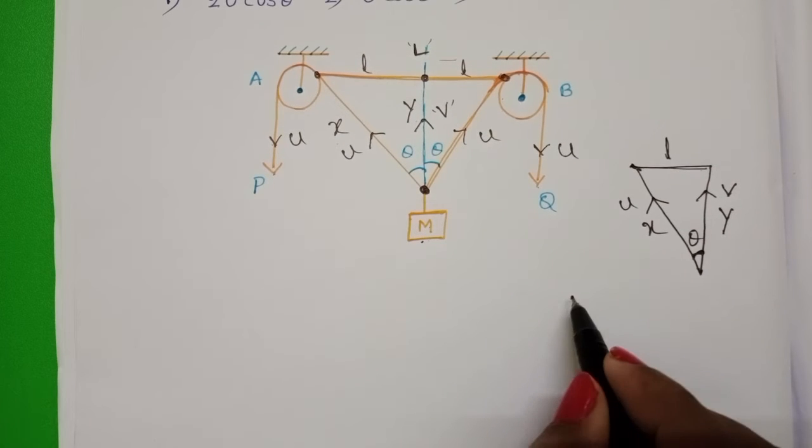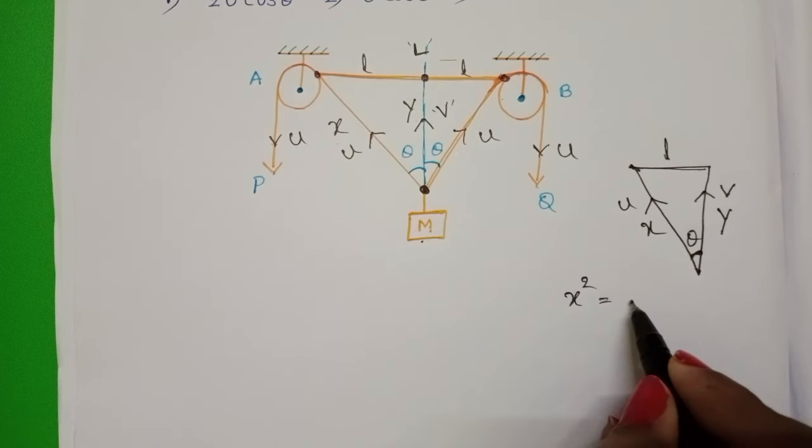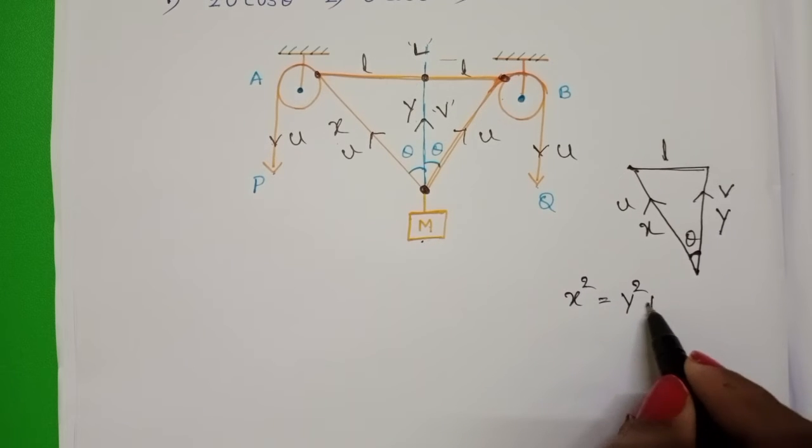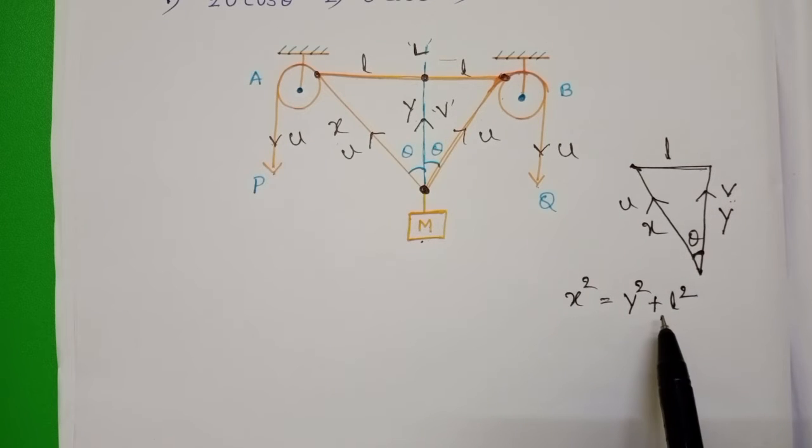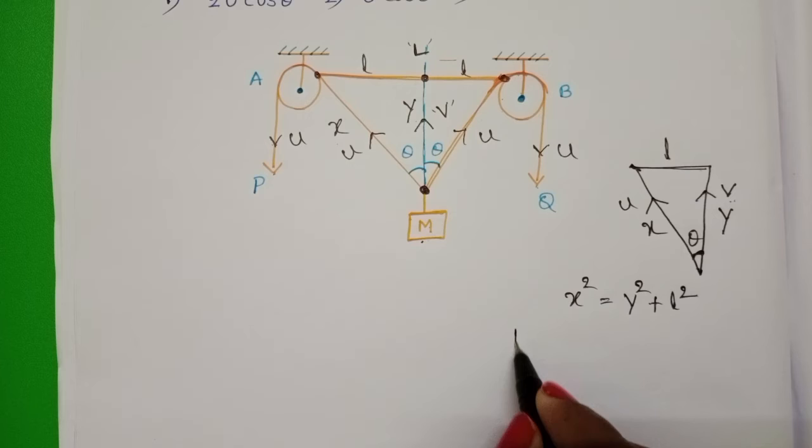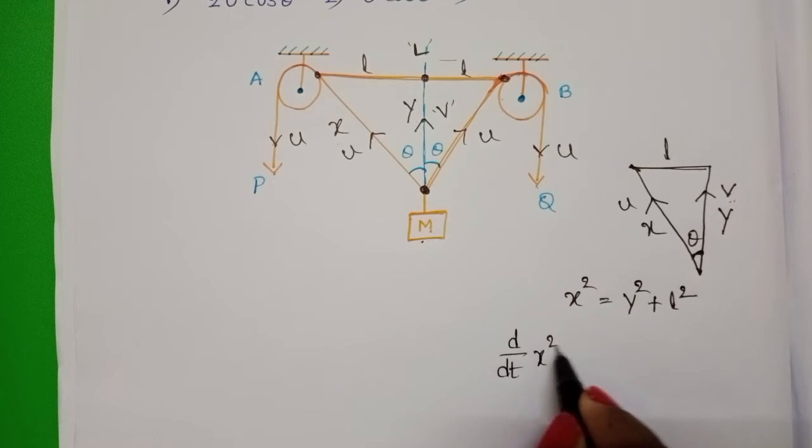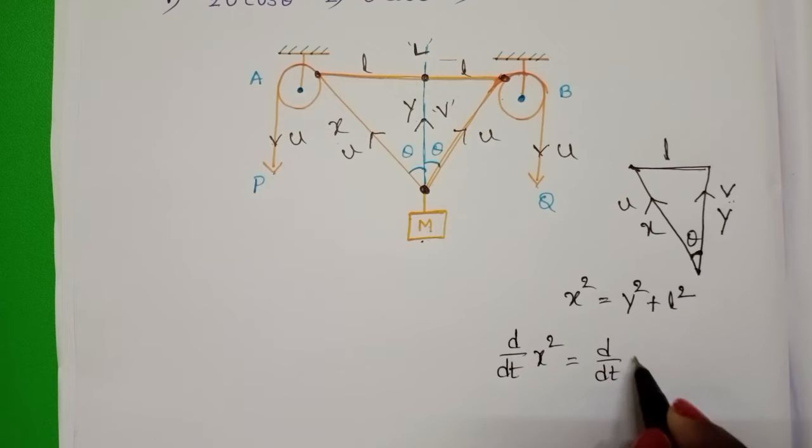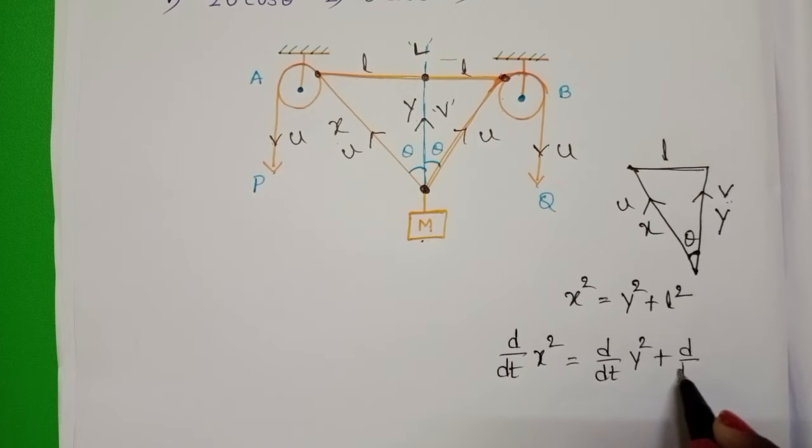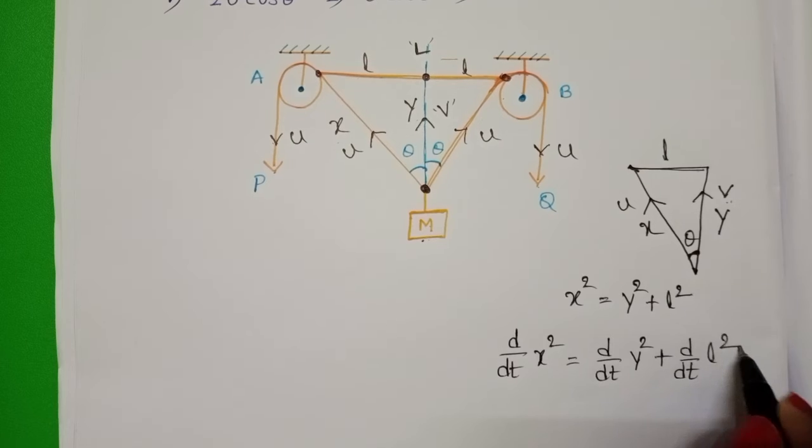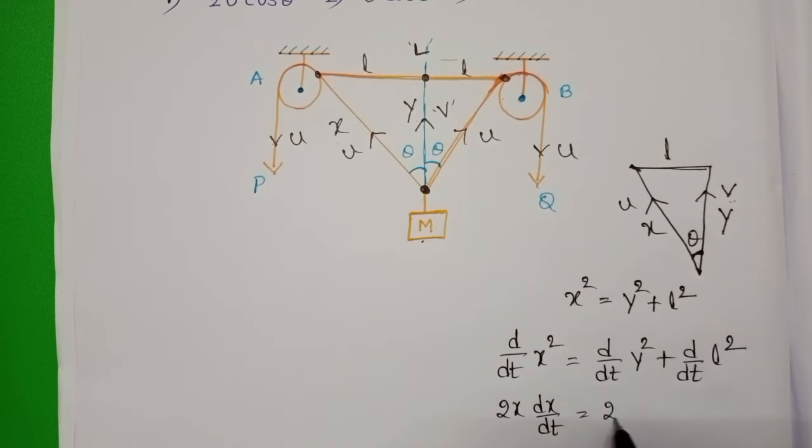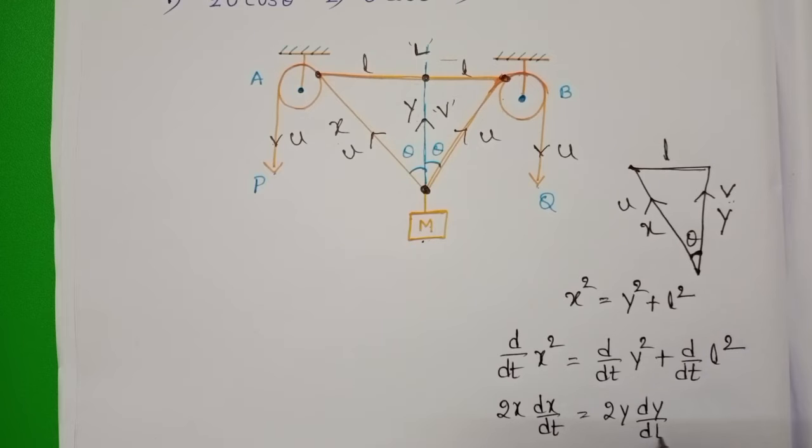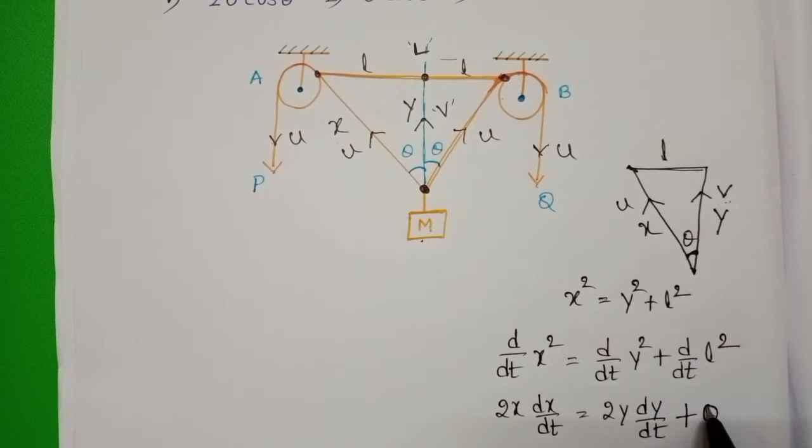By using Pythagorean theorem, X square is equals to Y square plus L square. To find out V, differentiate on both sides with respect to time. D by dt of X square is equals to D by dt of Y square plus D by dt of L square. So differentiation of X square becomes 2X into DX by dt, 2Y into DY by dt, and differentiation of constant is 0.